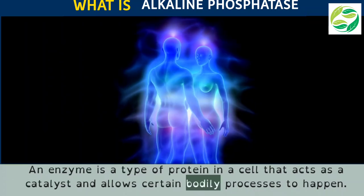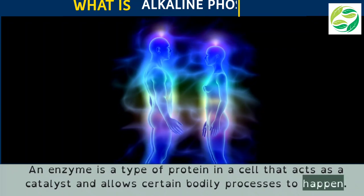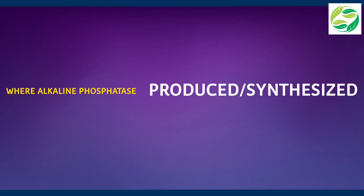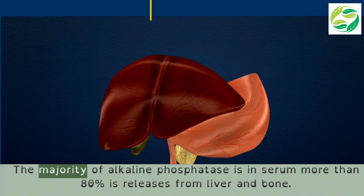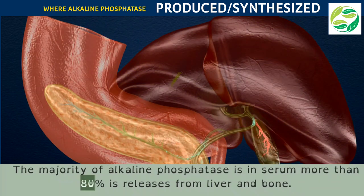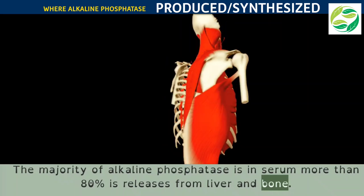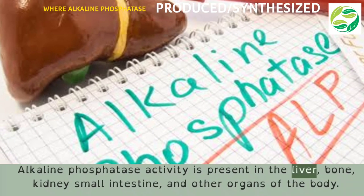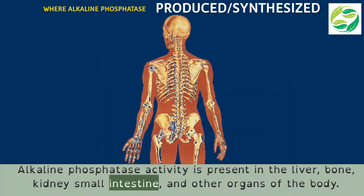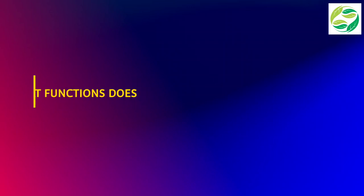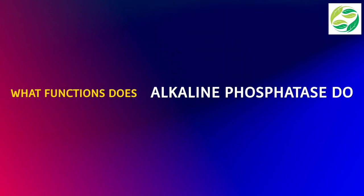Where is alkaline phosphatase produced? The majority of alkaline phosphatase is in serum — more than 80 percent is released from the liver and bone. Alkaline phosphatase activity is present in the liver, bone, kidney, small intestine, and other organs of the body.